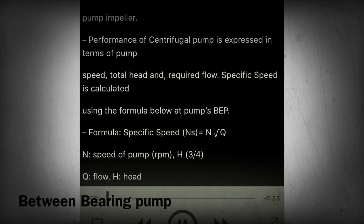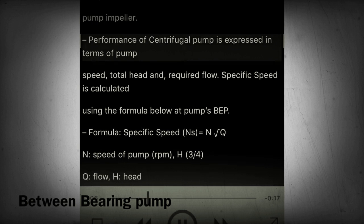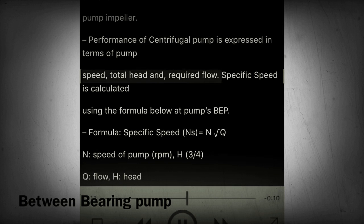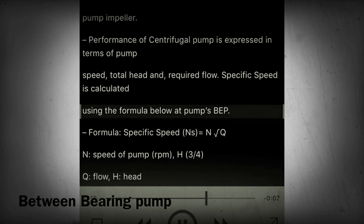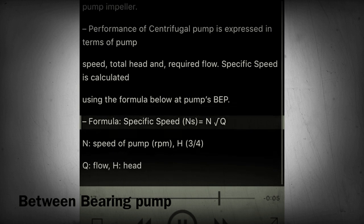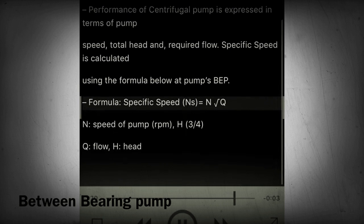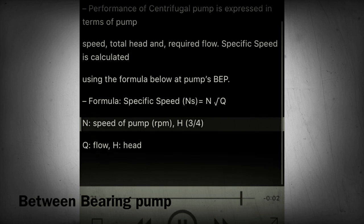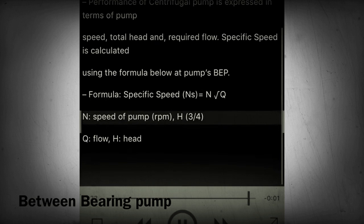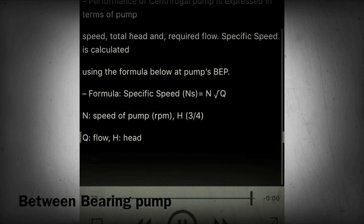Section 28 - Specific speed. Specific speed is used to describe the geometry and shape of a pump impeller. Performance of a centrifugal pump is expressed in terms of pump speed, total head, and required flow. Specific speed is calculated using the formula at the pump's BEP: Ns = N × √Q / H^(3/4), where N is speed of pump in RPM, Q is flow, and H is head.